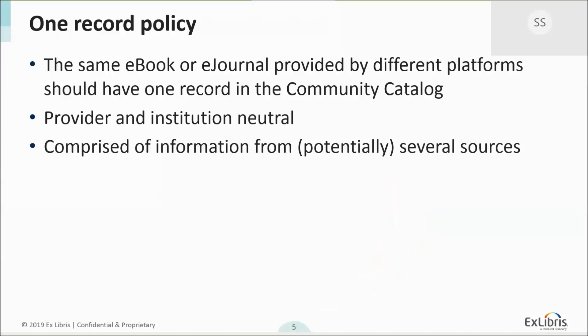Important for the structure of the Community Zone is that we have a one record policy. When we have the same e-book or e-journal on several different providers' platforms, there should ideally be one record for the same instance in the catalog. Because it can be tied to many different providers, it should be neutral — just the descriptive information about that e-book itself, not information about the platform. Because of that structure, our Community Catalog has evolved so that a single record is not necessarily a pure record but may be comprised of information from several sources.